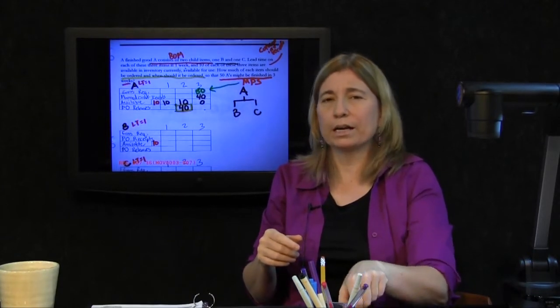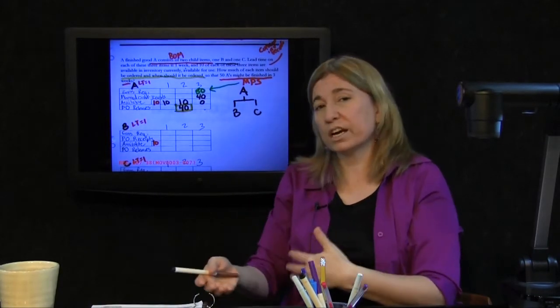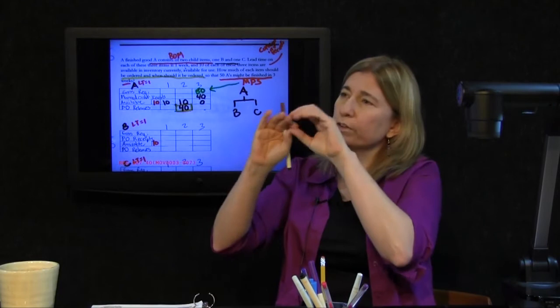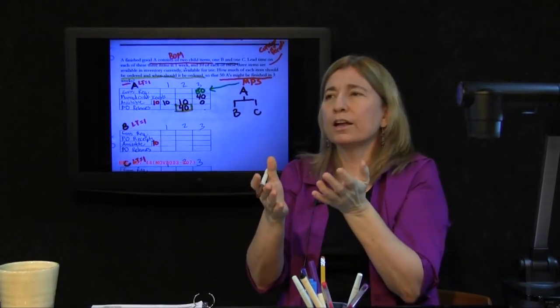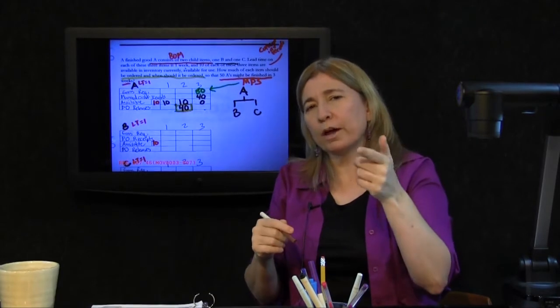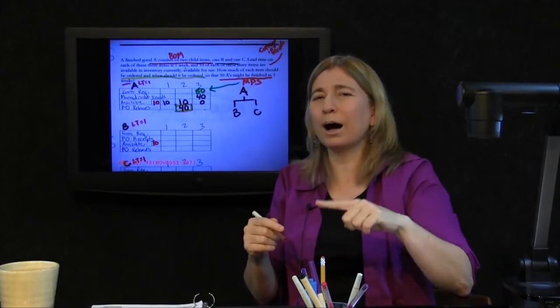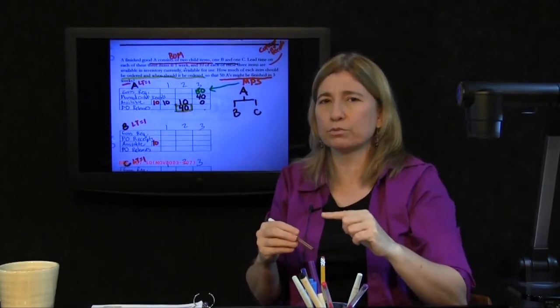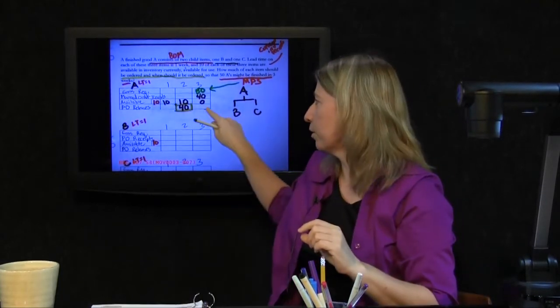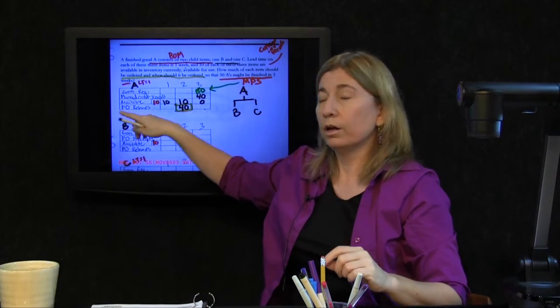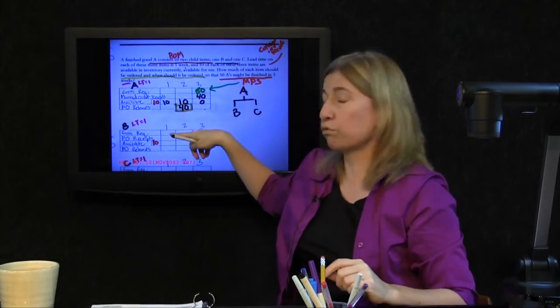Note to self, order forty item A in the second week. Now, what about item B and C? What's the next step with MRP? Once you've filled out all the records on level zero, well there was just this one, then the bottom line of the parent is passed into the top line of the child's record. The planned order releases of the parent, right here,